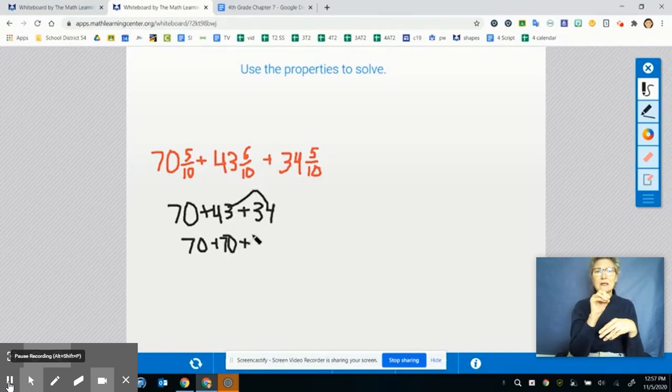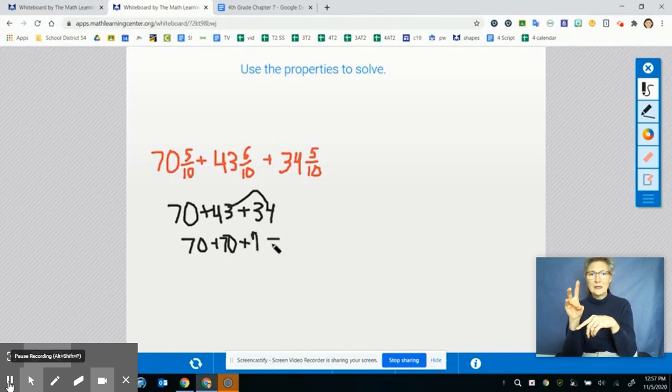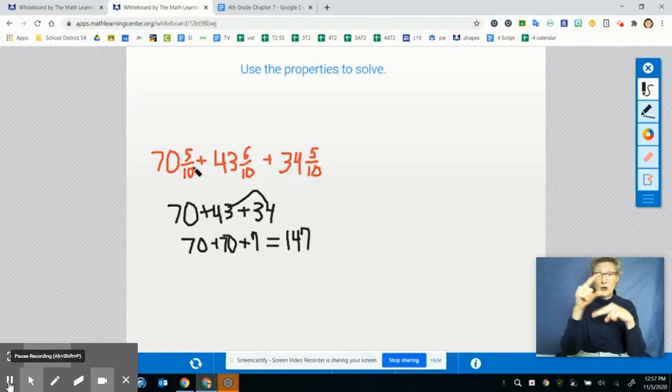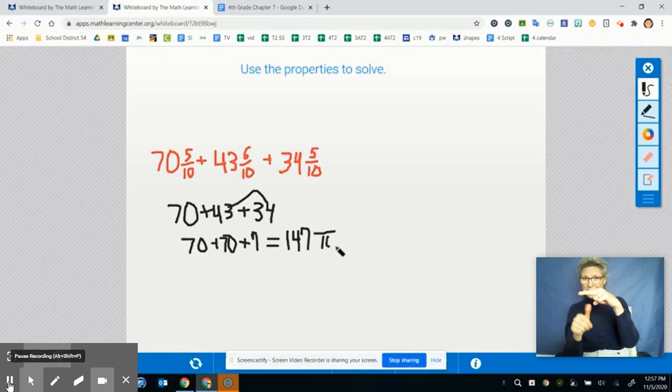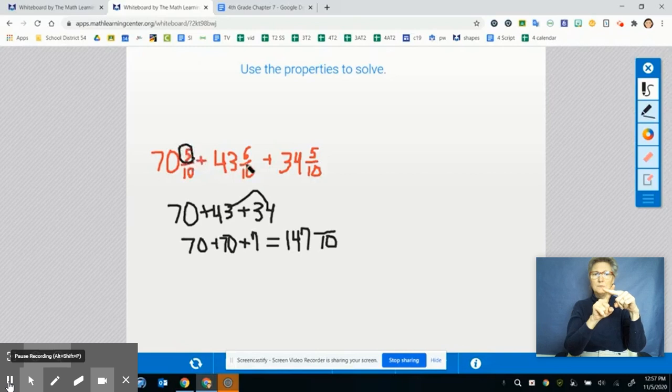So 70 plus 70 plus 7, I can do that really easily in my head. That's 147. And now I need to work with my fractions. I have a denominator of 10. So I'm going to leave my 10 as my denominator and I'm going to add up my numerators. So I'm going to add 5 plus 6 is 11 and 11 plus 5 is 16.